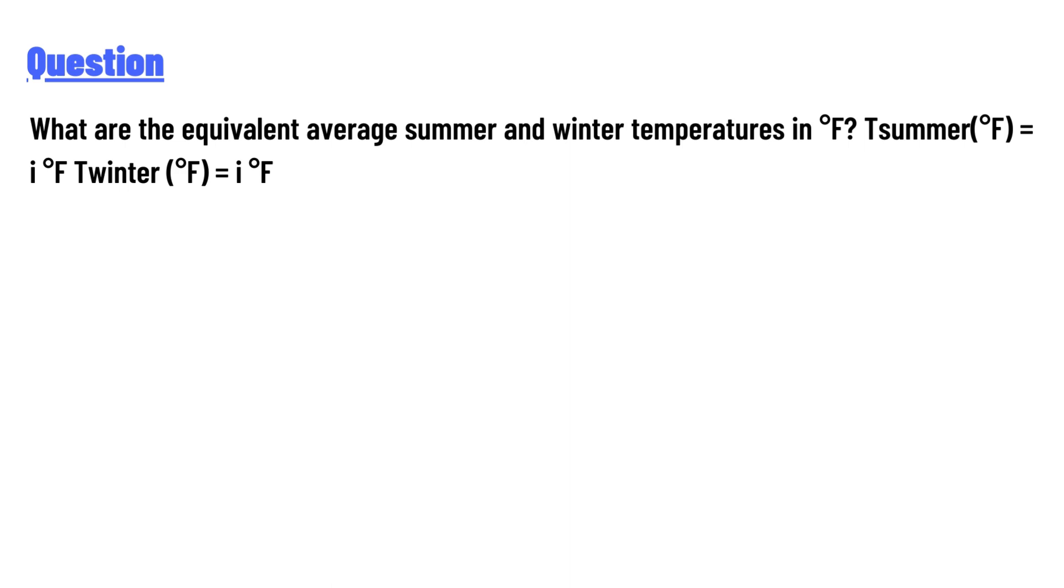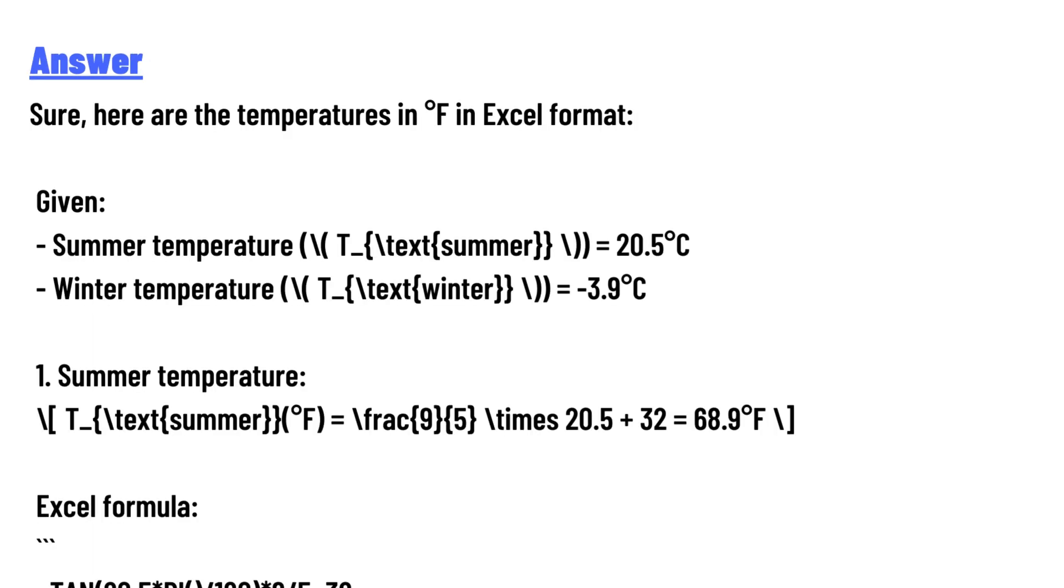The answer to the question is here. The temperature in Fahrenheit Excel format: given summer temperature T text summer equals 20.5 degrees centigrade, winter temperature T text winter equals minus 3.9 degrees centigrade.